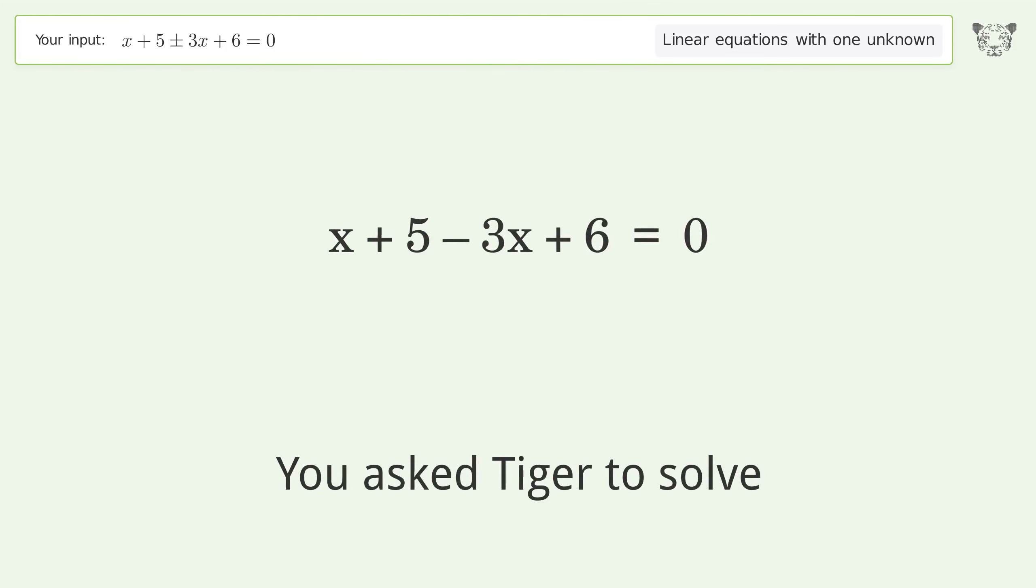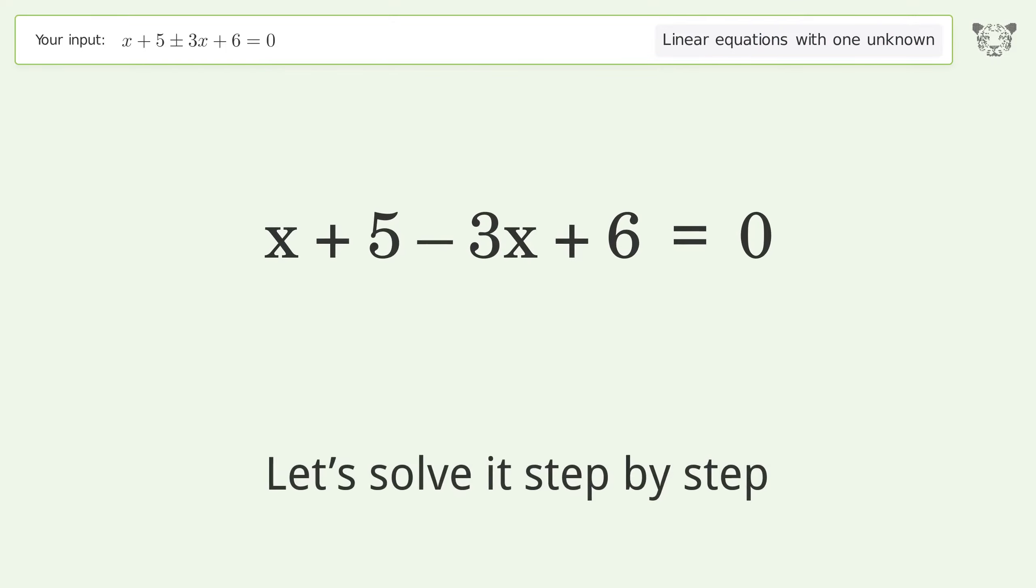You asked Tiger to solve this. It deals with linear equations with one unknown. The final result is x equals 11 over 2. Let's solve it step by step. Simplify the expression.